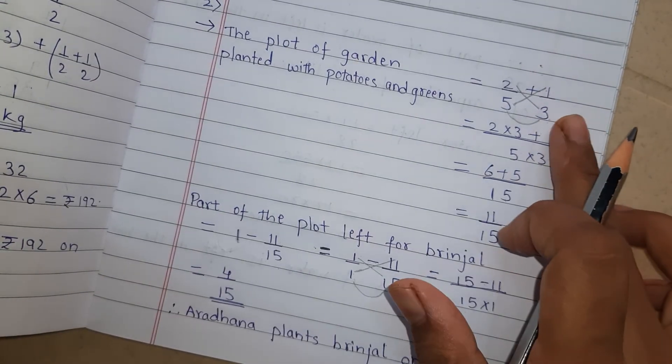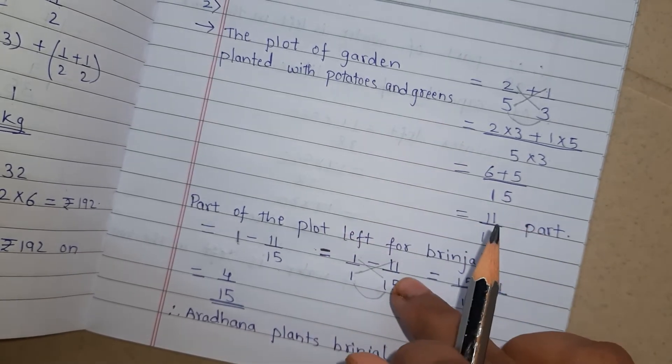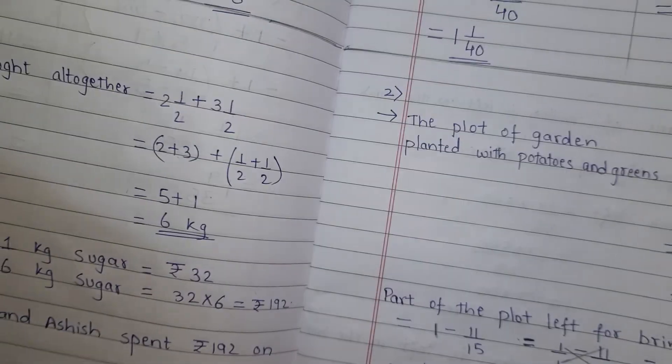First we have to do addition of potato and leafy vegetable part. And then we have to subtract this number from 1. Understood. Now the third example.